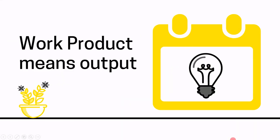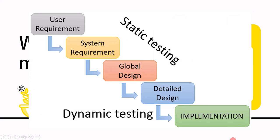Work product is nothing but the output. These are the steps followed during the development of software in an organization. The first step is to get user requirements, then we develop system requirements, then comes the global design, next is detailed design, and the last step is implementation where software is developed. In the system requirement stage, the output is a system requirement document. In the global design and detailed design stage, the output is a design document, and in the implementation stage, the output is code. Therefore, work products are the system requirement document, design document, and code.